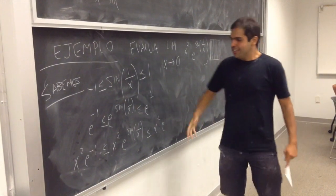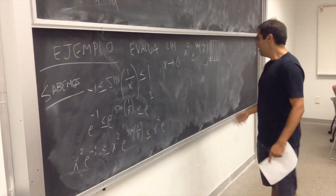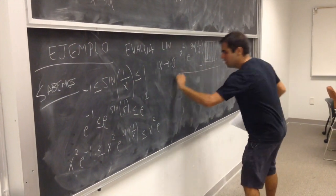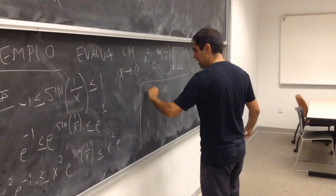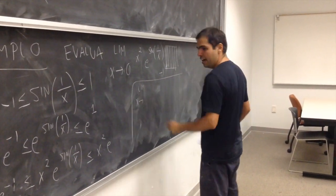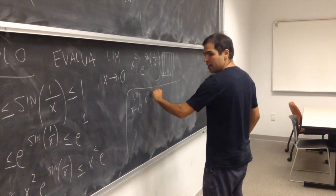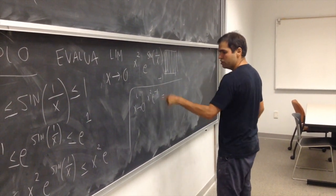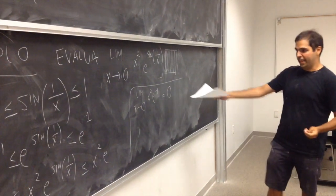Y, además, sabemos que estos límites son más fáciles para calcular, porque sabemos que el límite de x tiende a 0 de x cuadrado e a la menos 1, este solo es una constante, es igual a 0,